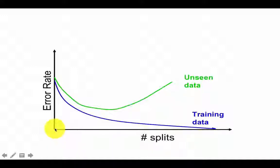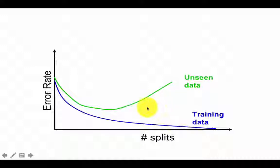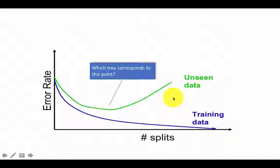The number of splits goes from zero — no splits, one leaf node — up to nine splits giving ten leaf nodes. The error rate keeps reducing on training data, but as we've seen it will reduce up to a point and then start increasing. So we want to find the number of splits that leads to that optimal point — somewhere between one and ten leaf nodes lies our best tree in terms of performance on unseen data.